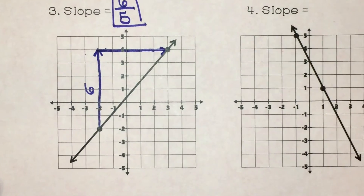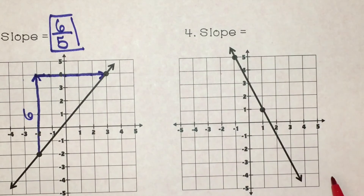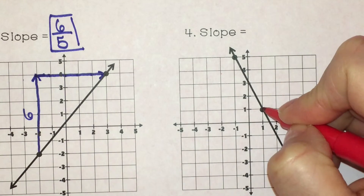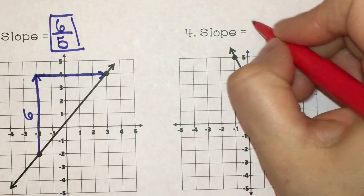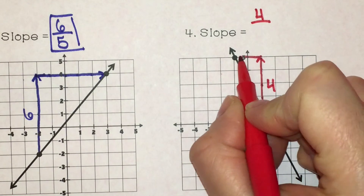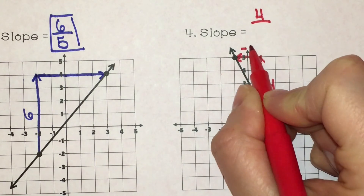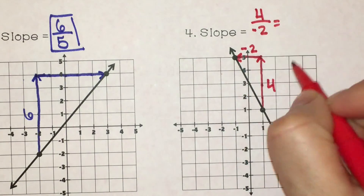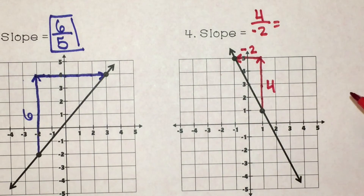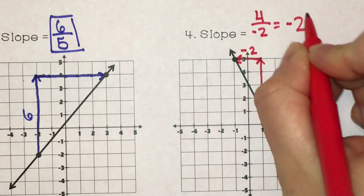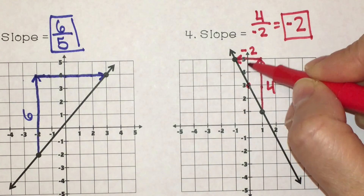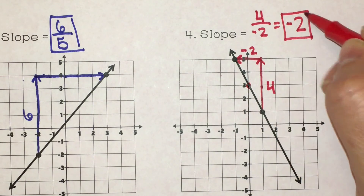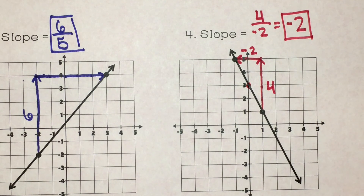For the last one, it's going down from left to right, so I know it's going to be negative. Start at the bottom point, go 1, 2, 3, 4 up — remember, going up is positive. Then run to the left: 1, 2 — running to the left is negative, so negative two. Four over negative two reduces to a whole number: negative two. I could have used a different pair of points, which would have given me positive two over negative one, and that again gives negative two. So you can see that between any two points, your slope is always going to be the same.